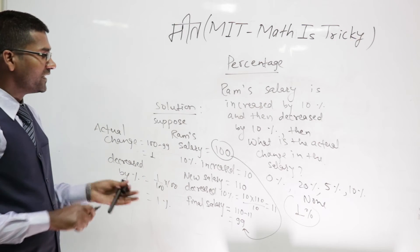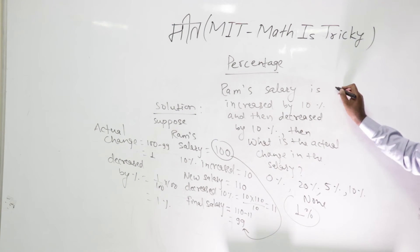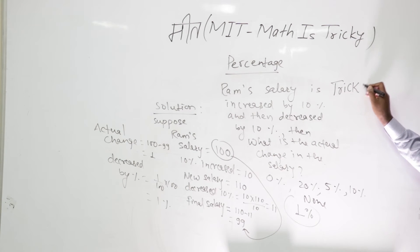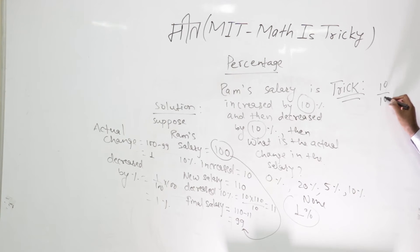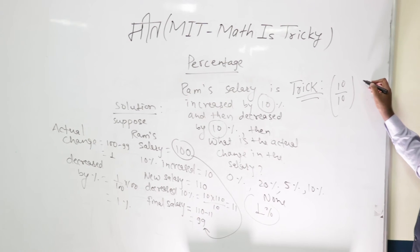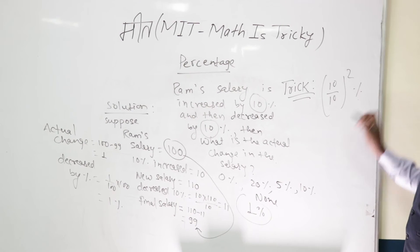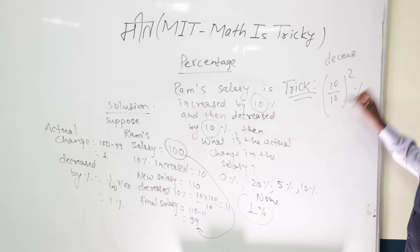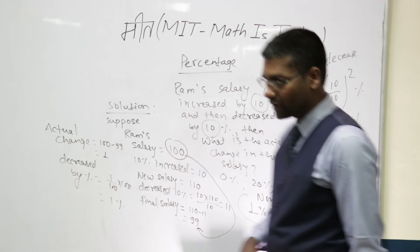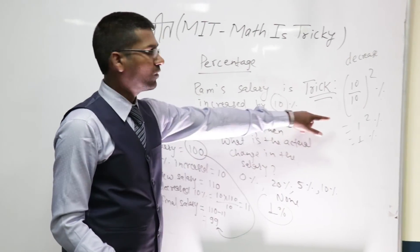The trick is: 10 percent increase, 10 percent decrease. Always the formula is 10 by 10 squared percent, that's your answer. Always there will be a decrease. It will be decreased by 1 squared, which is 1 percent.